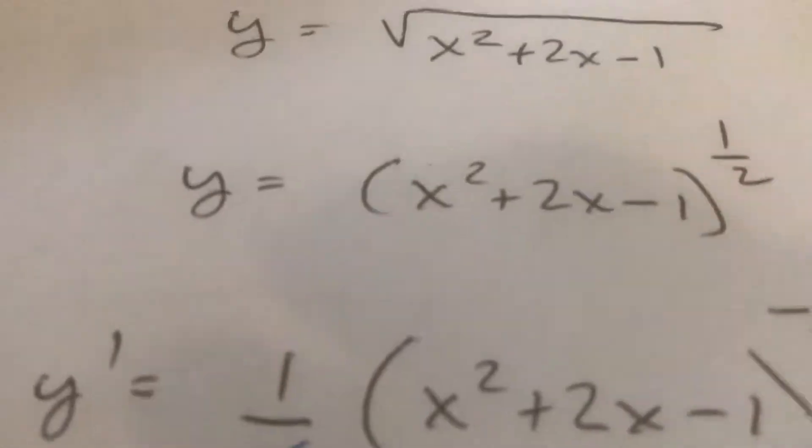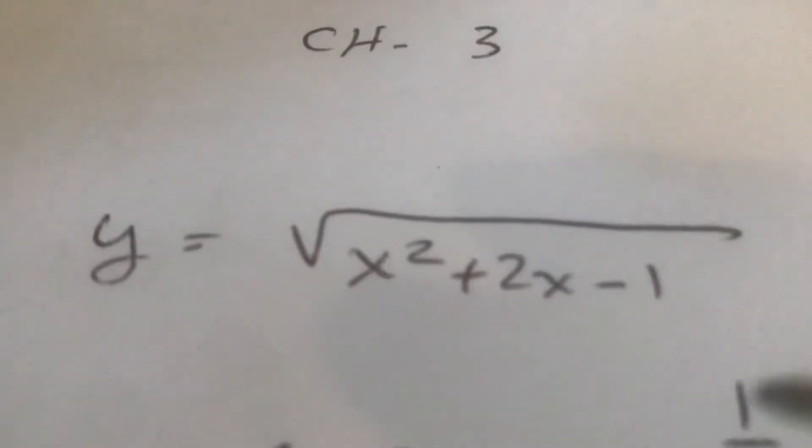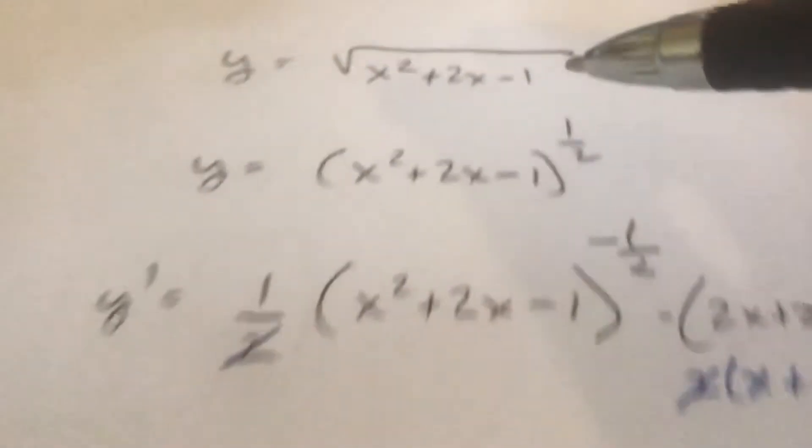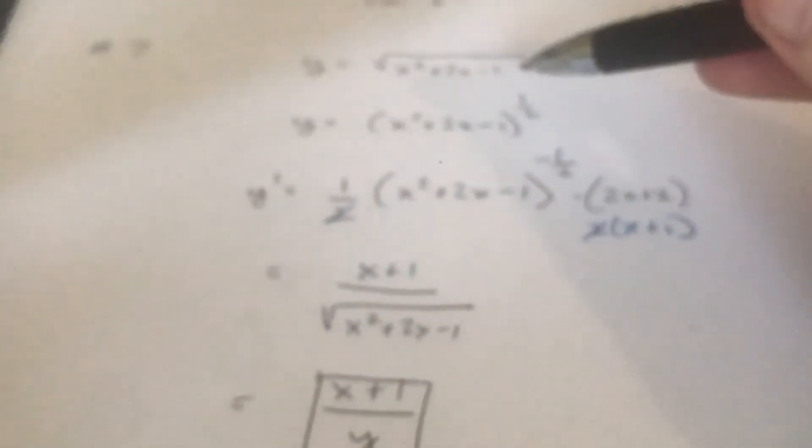Now if you go back to the original you see that y equals the square root of x squared plus 2x minus 1.